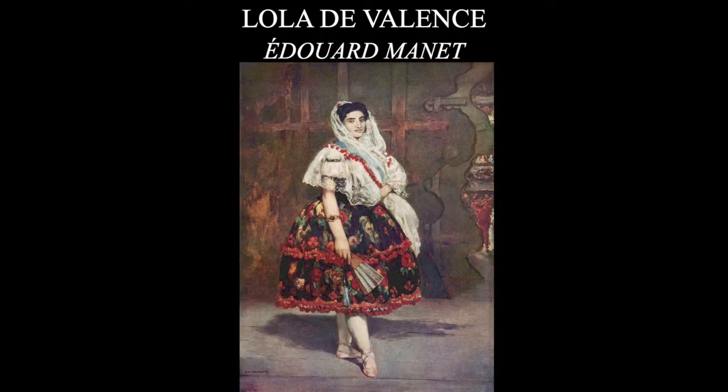One of Manet's early paintings was rejected from the Salon of 1862. Manet was also very interested in Spanish society and did a lot of works involving bullfights and related subject matter — he was obsessed with Spain. He did go on vacation to Spain once for 10 days in the fall of 1865, and he absolutely hated it, then returned to Paris.